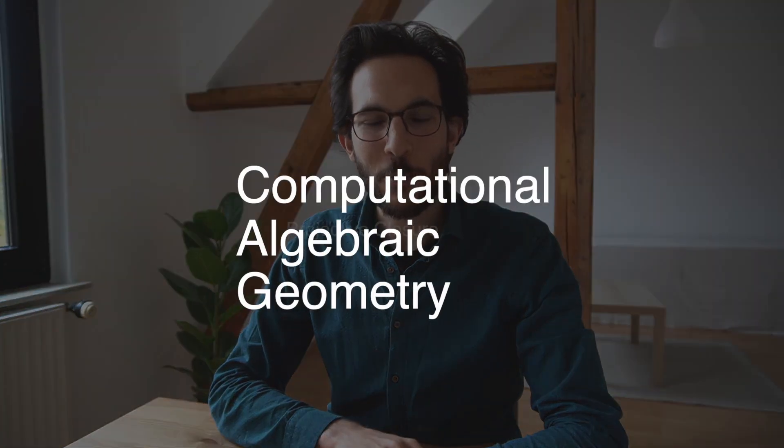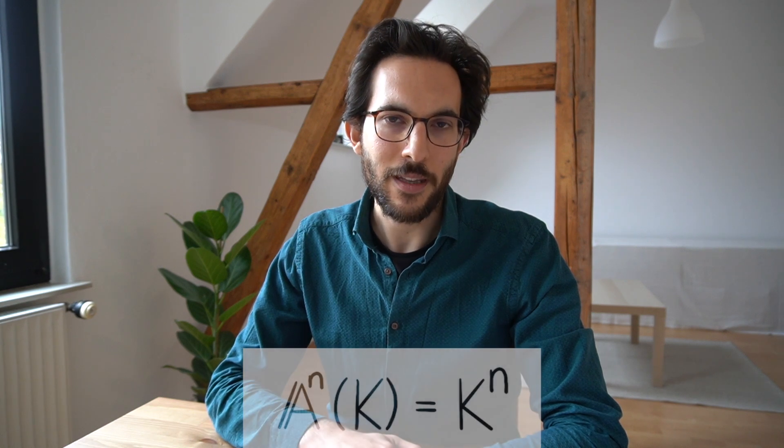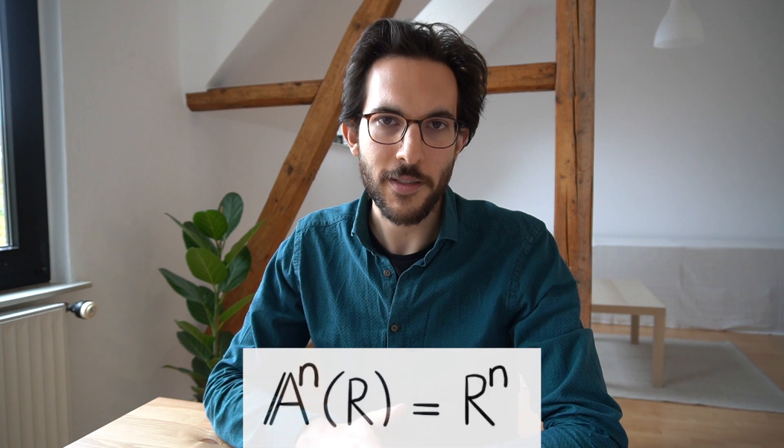We will start talking about the projective closure. A final remark before we do: just like we write Pn to denote the projective space in a field-agnostic manner and Pn of k to denote the space of lines inside k^(n+1), we use An to denote the affine space in a field-agnostic manner. So An of k is just the vector space k^n, and An of a ring R is just R^n as a set.